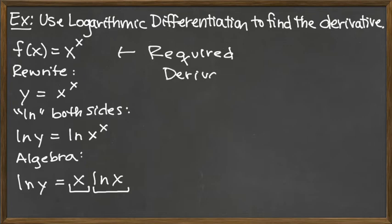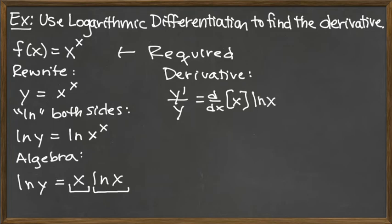We have the derivative of each side. The derivative on the left-hand side is y'/y. On the right-hand side, we need a product rule. That's the derivative of the first term, which is x, times ln(x), the second term, plus the first term, which is x again, times the derivative of the second term, ln(x). To complete the derivative, we take those small derivatives inside the product rule. The derivative of x is simply 1.